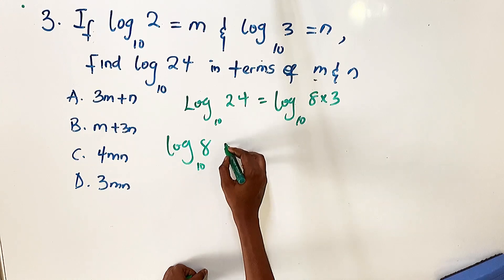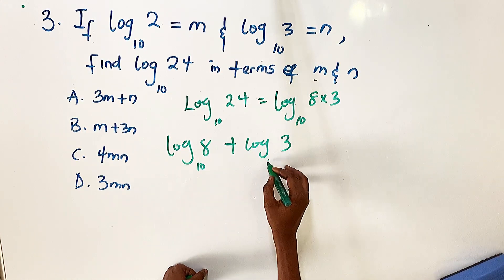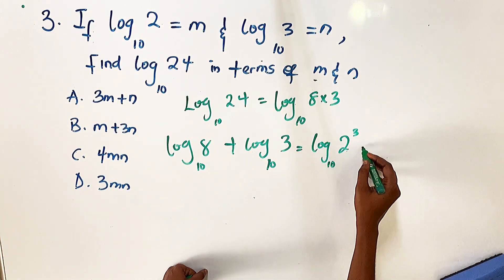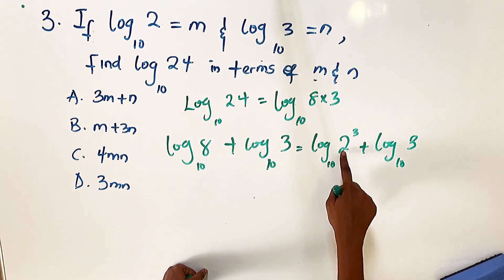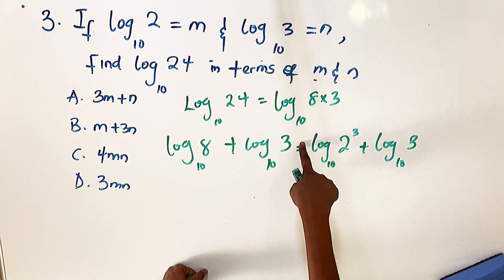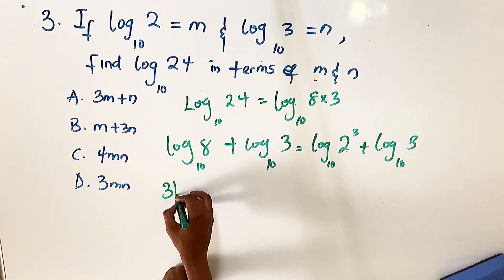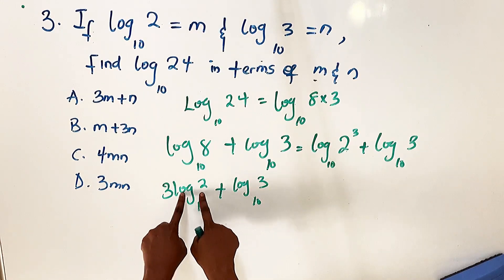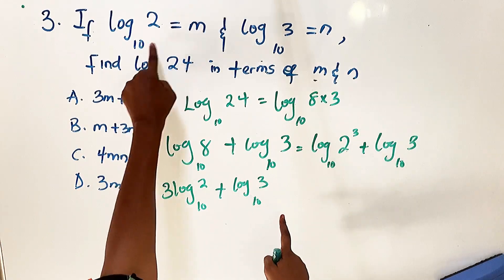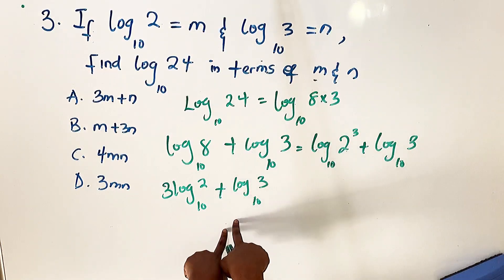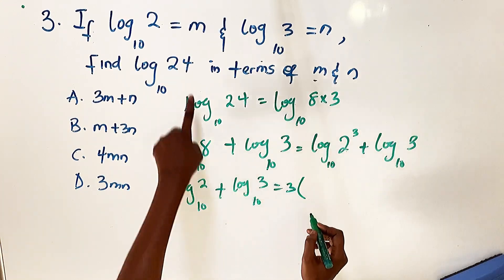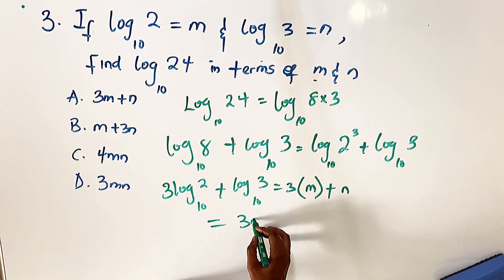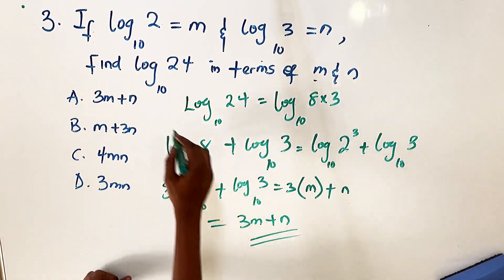Breaking this out using log rules: log 8 base 10 + log 3 base 10. Log 8 can be written as log 2³ base 10, and bringing the power down gives 3 · log 2 base 10 + log 3 base 10. Since log 2 base 10 = m and log 3 base 10 = n, substituting gives 3m + n. Our answer is A.